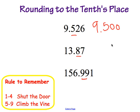The next one — we are looking at that number to the right of the underlined number. Is it 1 through 4 or is it 5 through 9? It is 5 through 9. So this time we are going to climb the vine, or increase that underlined number by 1. All the numbers after the underlined number turn to zeros. So our answer is 13 and 90 hundredths.